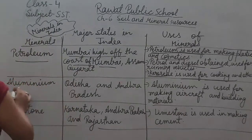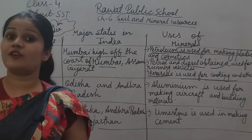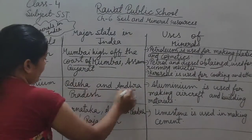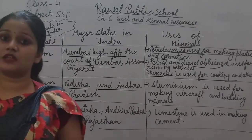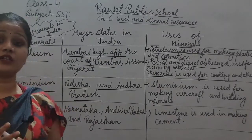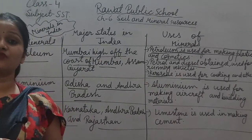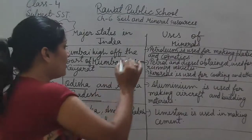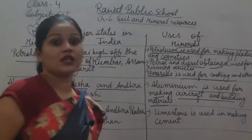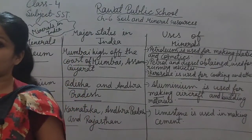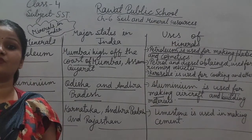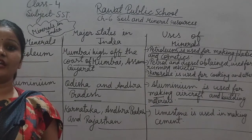Now the next mineral is aluminium. In which state is aluminium found? Odisha and Andhra Pradesh — these are the major states where aluminium is found. What are the uses of aluminium? Aluminium is used for making aircraft — meaning aeroplanes and helicopters — and also building materials.